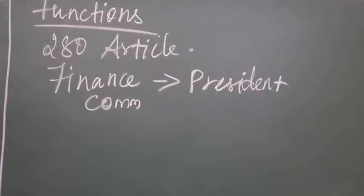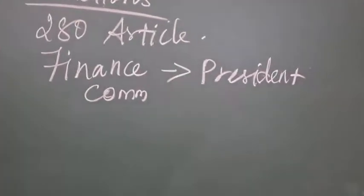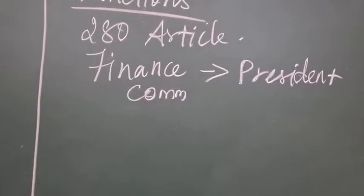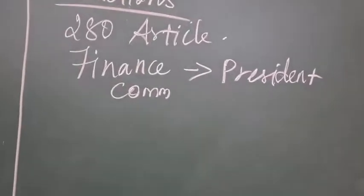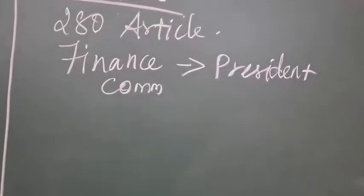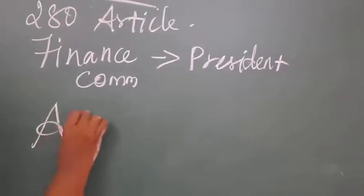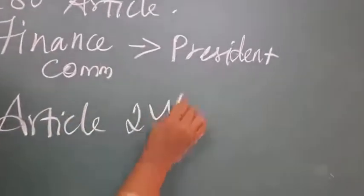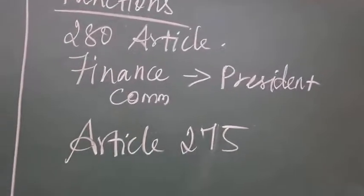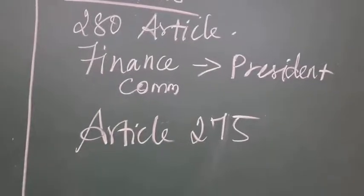The commission decides the distribution between the union and the states — taxes, allocation of funds, and the respective shares of the proceeds. It also governs the principles for granting aid, grants, and subsidies to states, covered under Article 275.